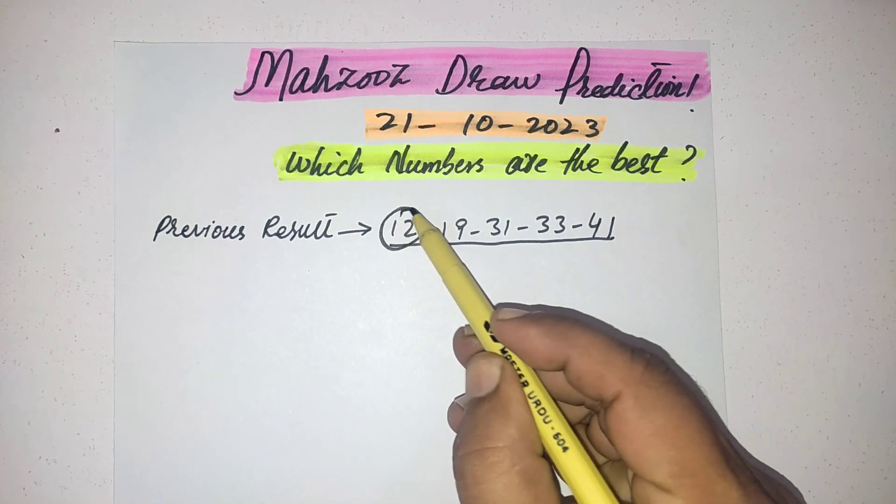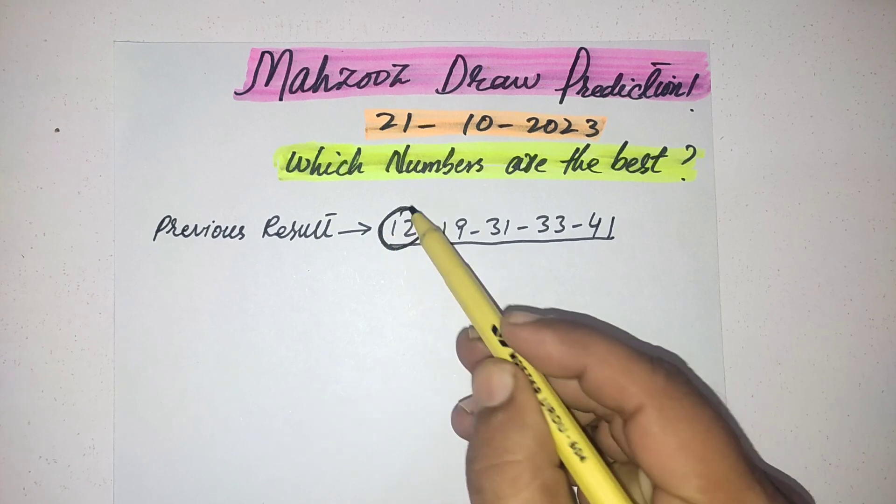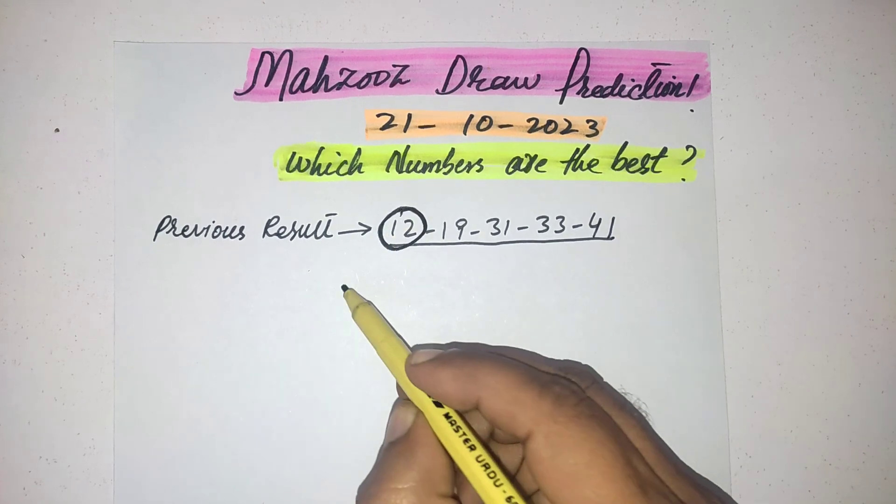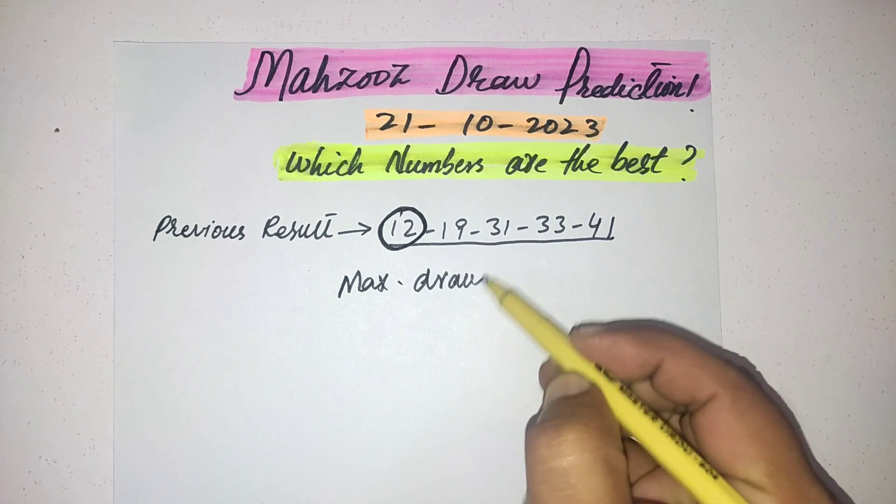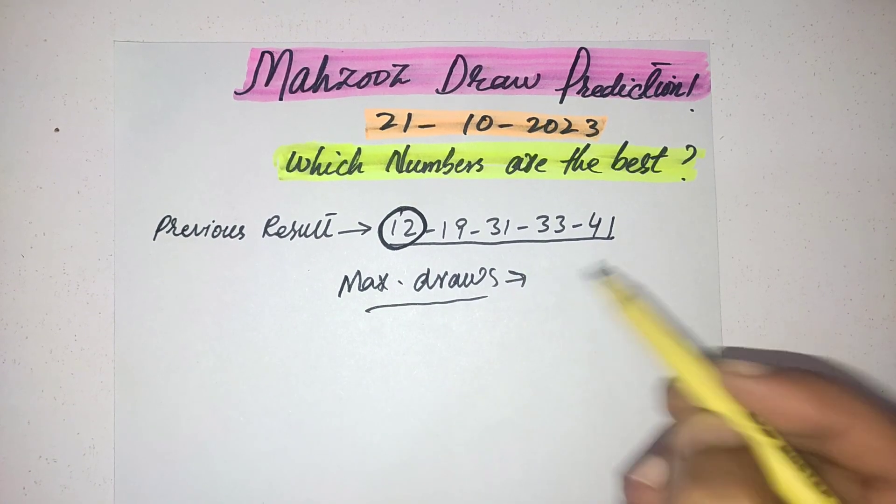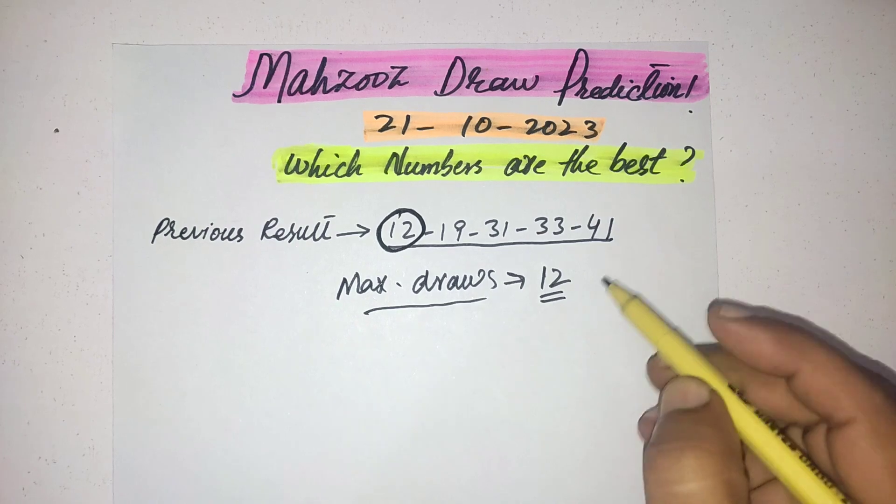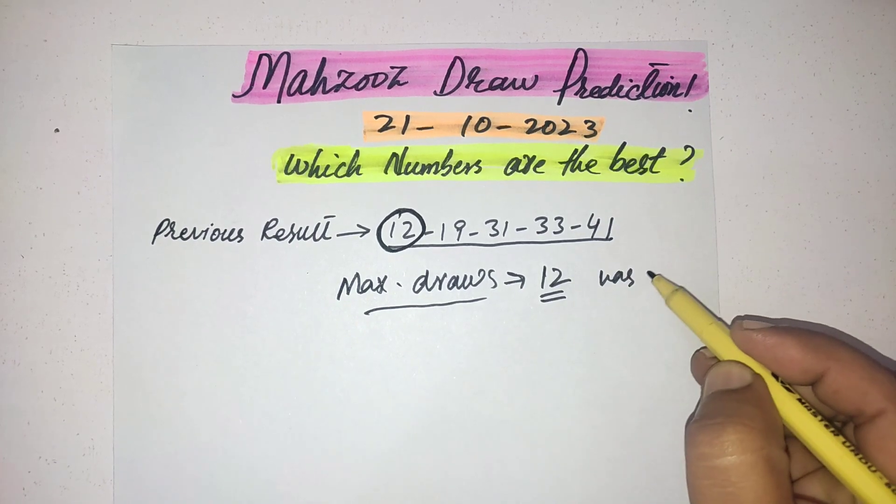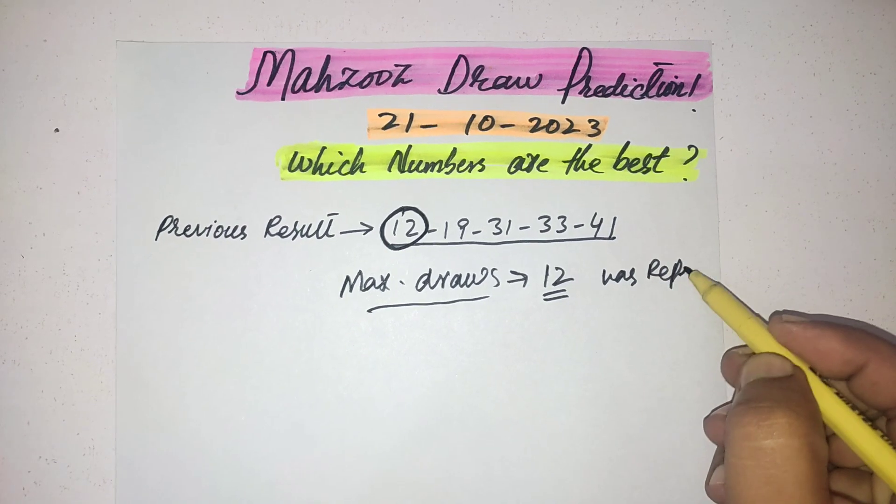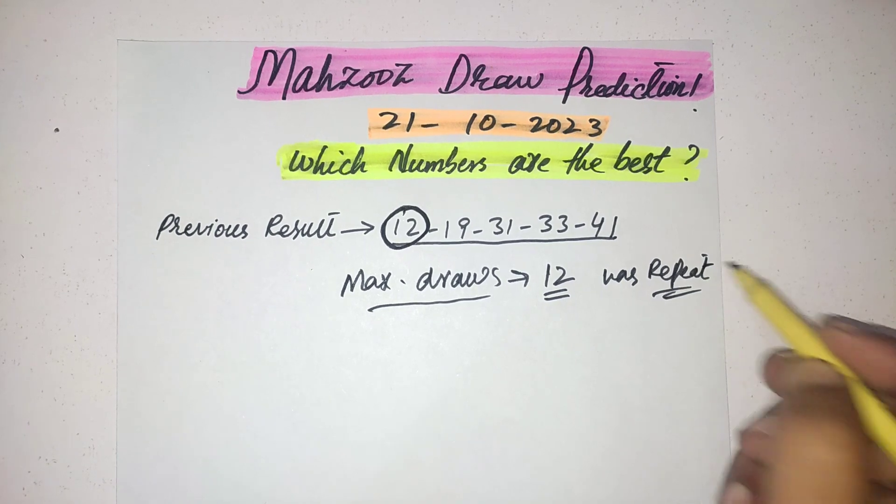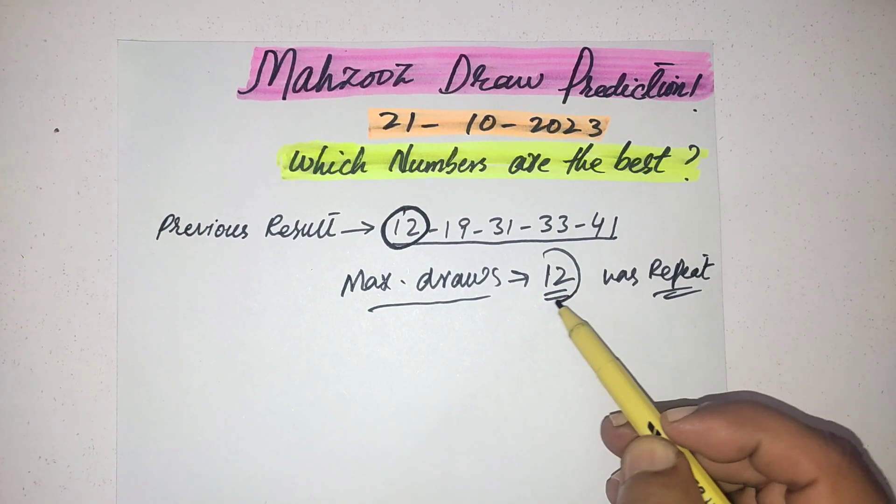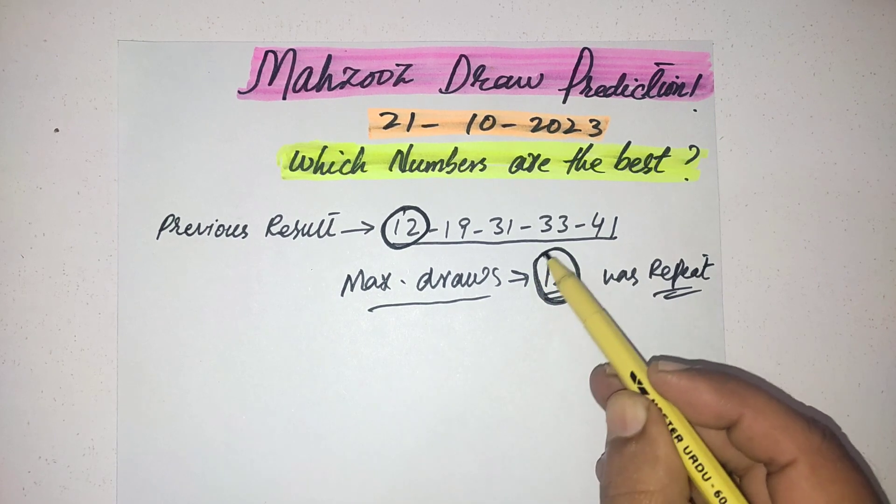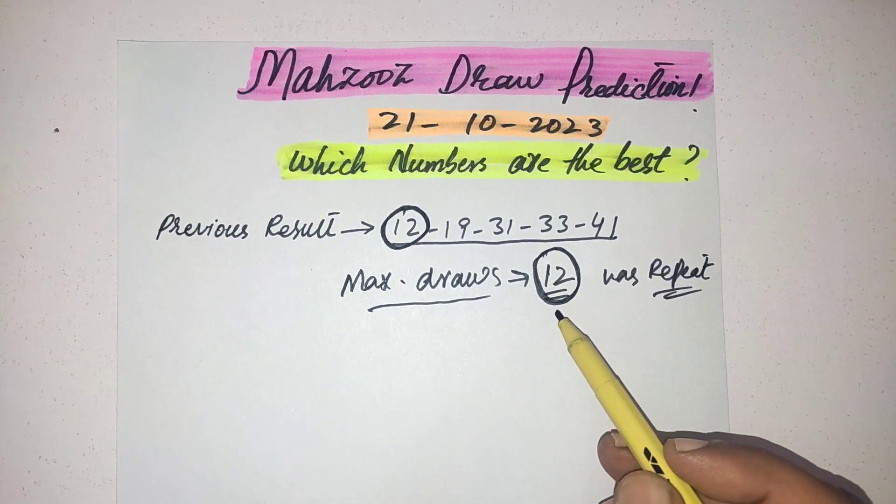12 number was repeated, so in the upcoming draw there are chances this number can repeat. This is a golden number for you. You should must select this in your selection. In this draw you should select your maximum numbers between 20 to 40.